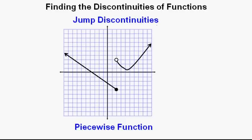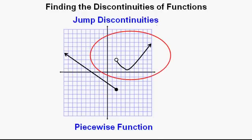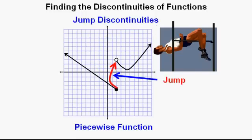This graph is an example of a jump discontinuity. It happens with piecewise functions mainly. A piecewise function is where the function changes at certain input values. From negative infinity to x equals 2, the function is a line with a negative slope. But for x greater than 2, the function switches to a different piece, jumping from y equals negative 4 to y equals 3 — a jump of 7 units straight up.